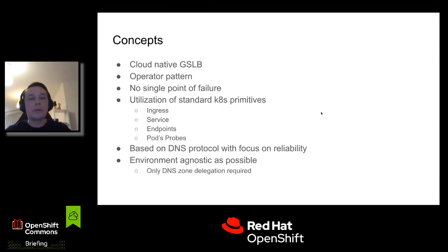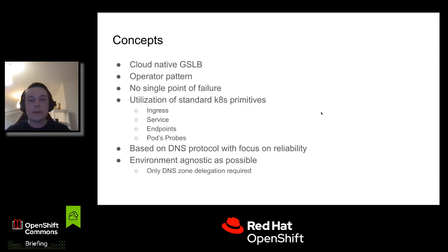We built KGB to be as independent of environment as possible. We rely on environment DNS — what we call edge DNS — such as Route 53, Infoblox, or NS1, which we have integration with. We configure only zone DNS delegation on the environment DNS, and the rest of the DNS responses are served dynamically by KGB itself.